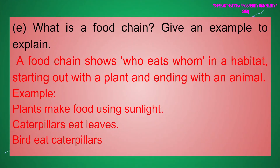(e) What is a food chain? Give an example to explain. Answer: A food chain shows who eats whom in a habitat, starting out with a plant and ending with an animal. Example: Plants make food using sunlight → Caterpillars eat leaves → Birds eat caterpillars.